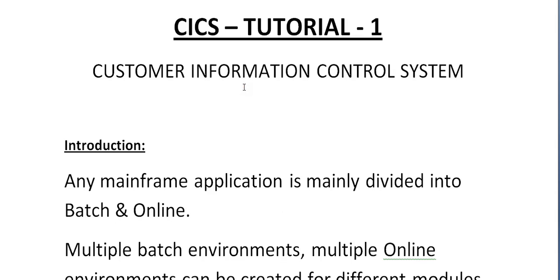So far we have seen a batch environment; now we would be entering into the online environment. In batch, all the processing happens in the background — a set of jobs are executed at a certain period of time. In online, everything will be live: you are provided with a certain set of screens where you enter data and get results at the same instance of time. Online is much faster compared to batch.